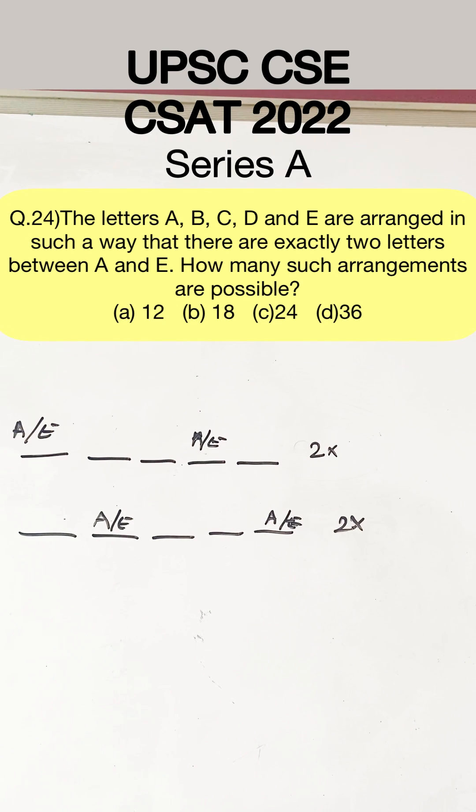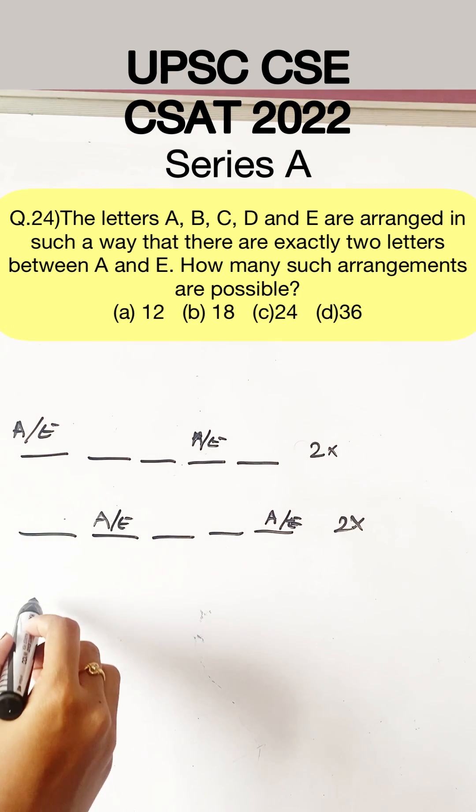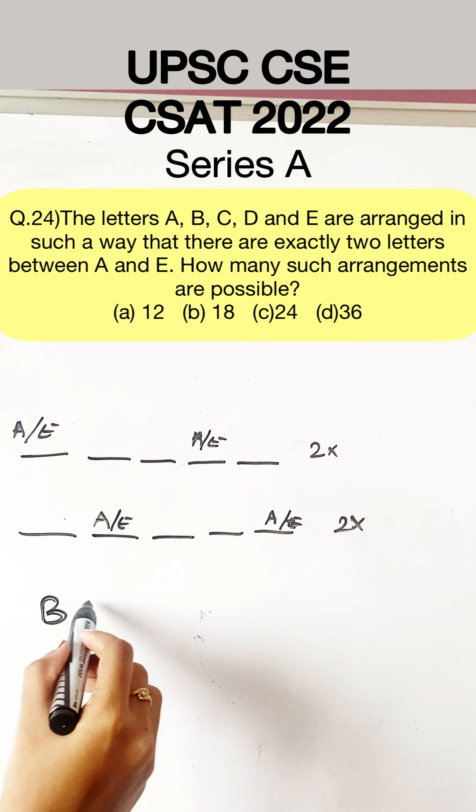By A or E, I mean that when A is occupying a position, the next position will be occupied by E. Now, what are the remaining letters? They are B, C and D.